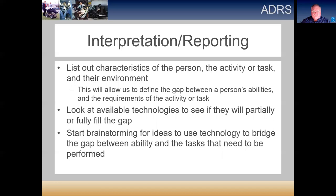Once we know what the gap is, we look for available technologies to see if they will partially or fully fill it. When I talk about designing an assistive technology system, it is about finding the technology that can fill that gap. The quickest approach is finding an off-the-shelf component or components to assemble a system for the person. If we don't have anything that works, we start brainstorming ideas for designs to bridge the gap between the person's ability and the functional requirements of the job.